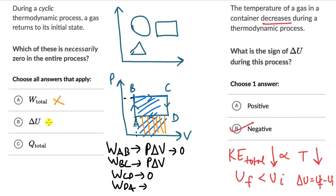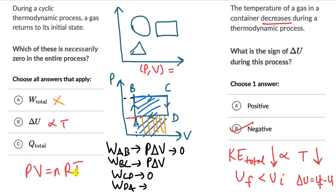For delta U: internal energy depends only on temperature. In a cyclic process the gas returns to its original state at A, meaning it returns to the same pressure and volume, and by the ideal gas law, the same temperature. So the internal energy has the same value as it did initially. Since it starts and ends at the same temperature, delta U is zero.